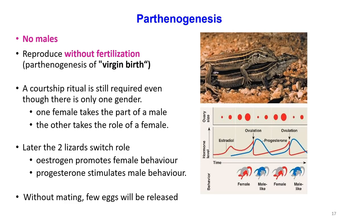An example of parthenogenesis is seen in whiptail lizard species. When there are no males in the group, parthenogenesis can take place with no fertilization. Even though there is only one gender, a courtship ritual is still required. One female takes the part of a male and the other takes the role of a female, and the two lizards can switch roles based on hormones — estrogen promotes female behavior and progesterone stimulates male behavior. Without mating, a few eggs are released.